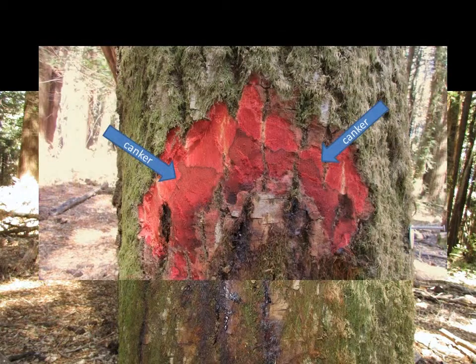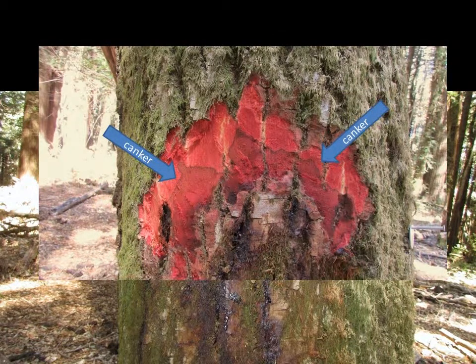Symptoms on Tanoak trunks are often similar to those on coast live oak. The pathogen causes bleeding cankers in the live bark or phloem. The canker is the area that has been killed by the pathogen. Beneath the outer bark surface, the canker appears as a brown discolored area, often with a dark border.